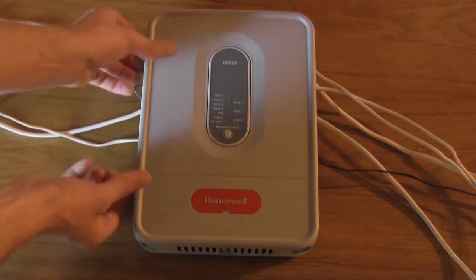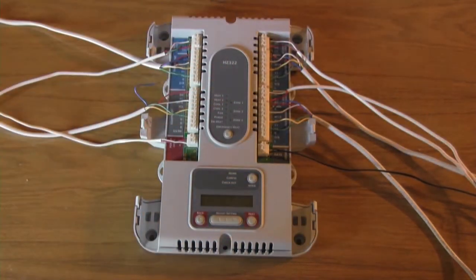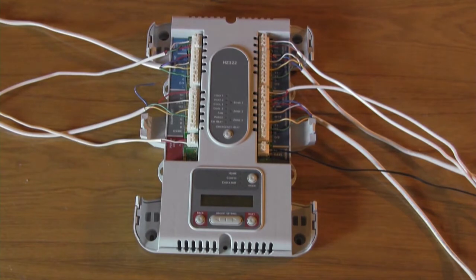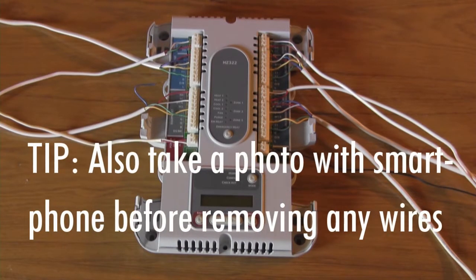The next thing we'll do is pull the lid off to expose all of the wiring. But before we remove any of the wiring, we want to label the wires so that there's no confusion when we go to wire up the SmartZone board.